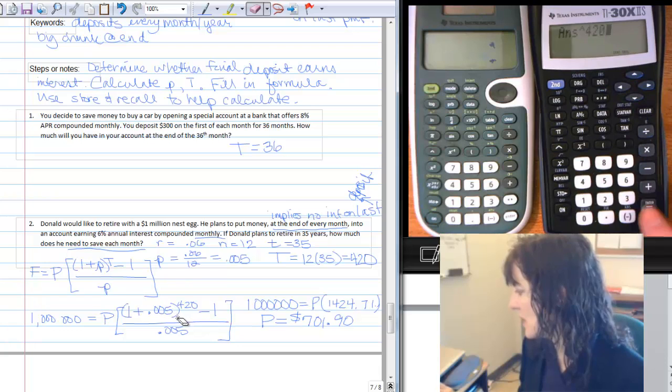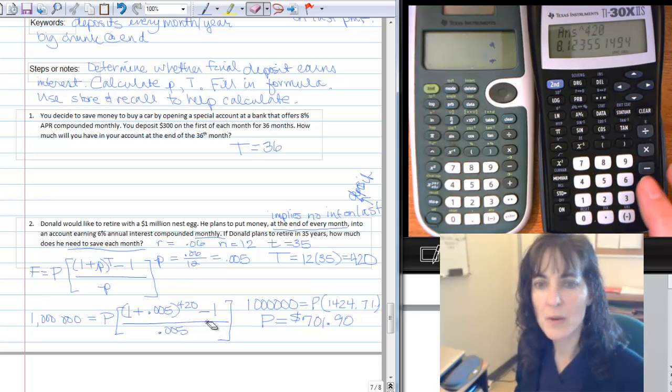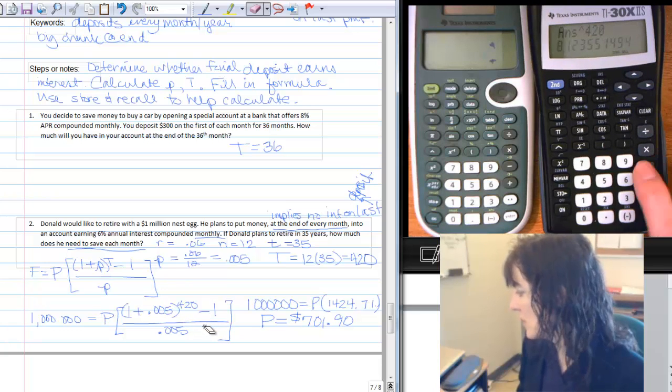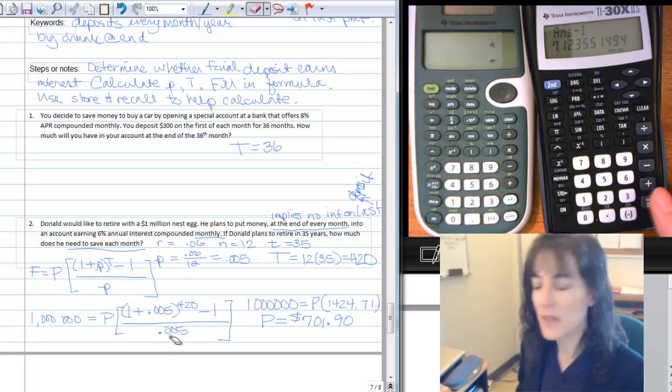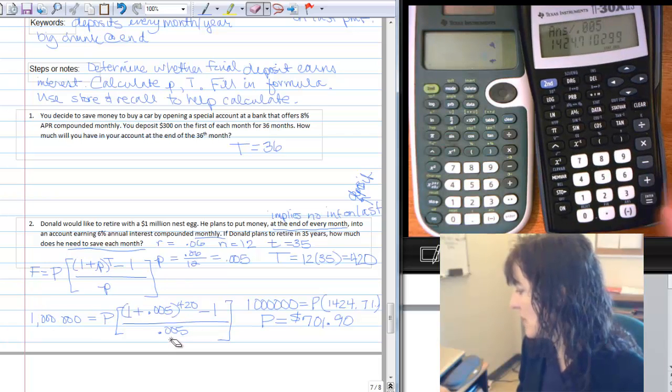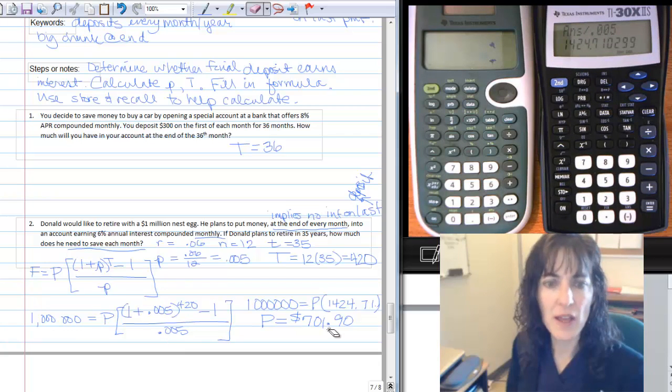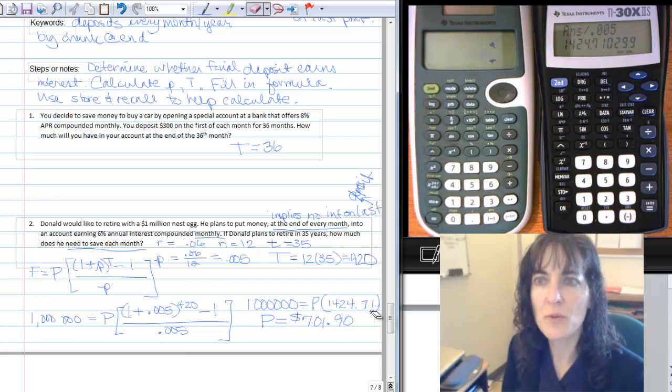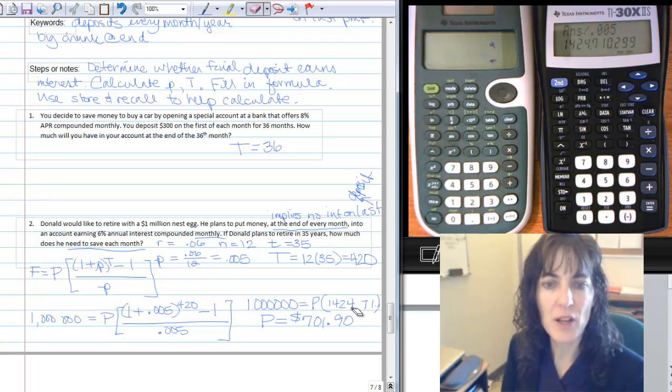So to the 420th and then minus one, and then divide finally by 0.005 and I get that 14.24 or 1424.71 and it goes on. So I'm good right to there.